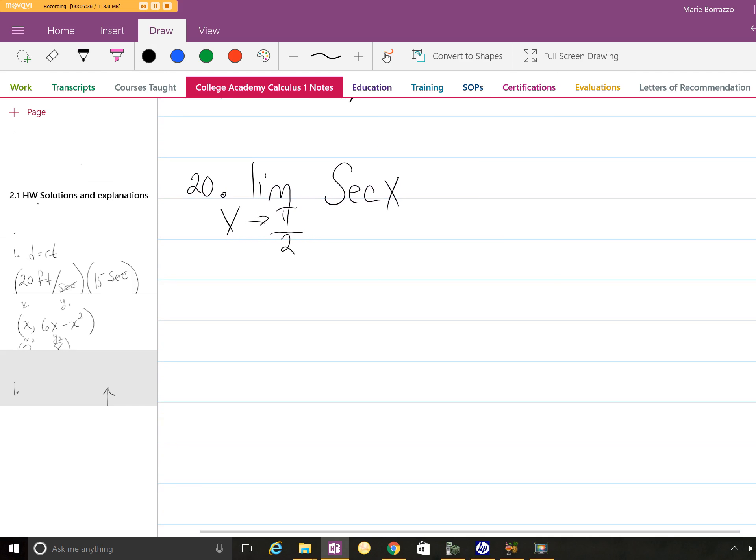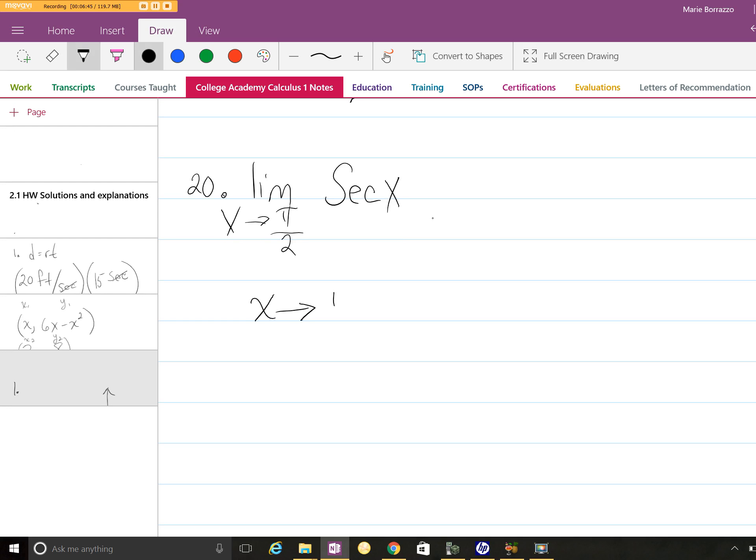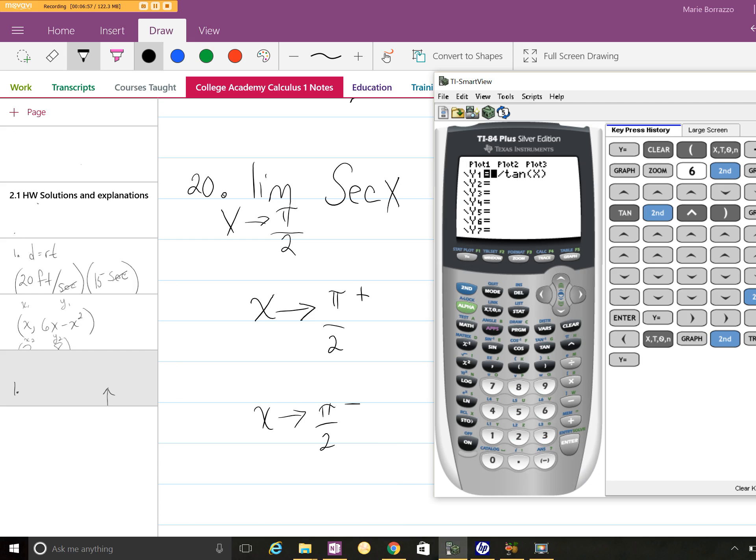Okay, so number 20, very similar in this one. So we're looking at π/2, and we're looking at it from x approaching π/2 from the right and x approaching π/2 from the left. So we'll grab the calculator again. Okay, so we're going to clear this out. And so we're going to do 1 divide cos, because that's secant, and we're going to graph.